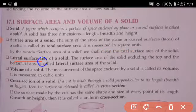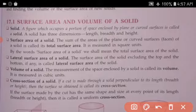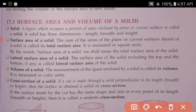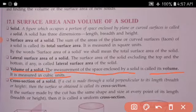Lateral surface area of a solid: the surface area of the solid excluding the top and the bottom is called the lateral surface area of the solid. Volume of a solid: the measurement of the space enclosed by a solid is called its volume. It is measured in cubic centimeters.